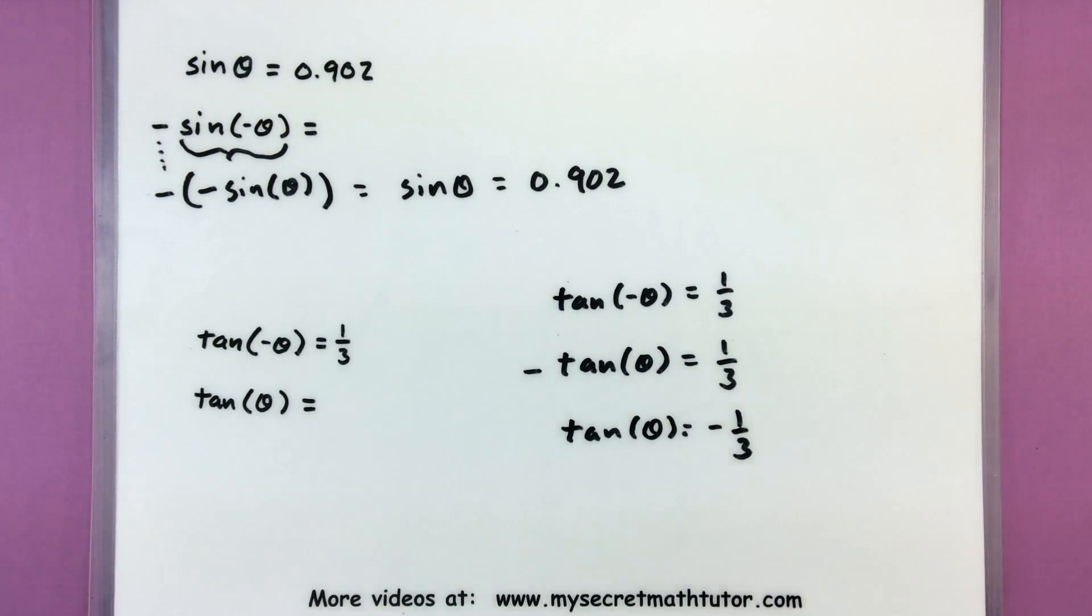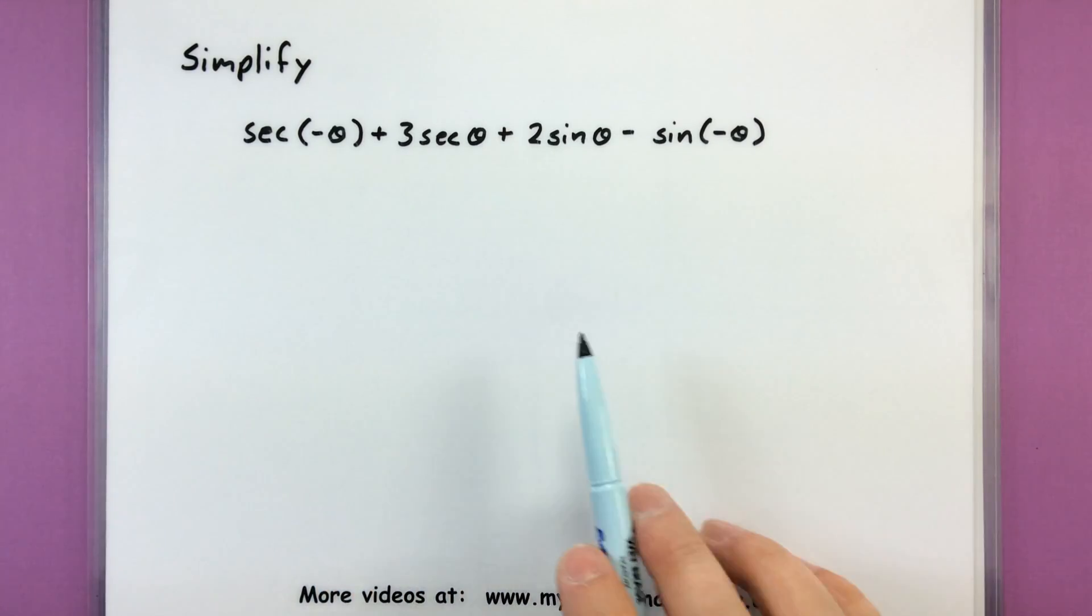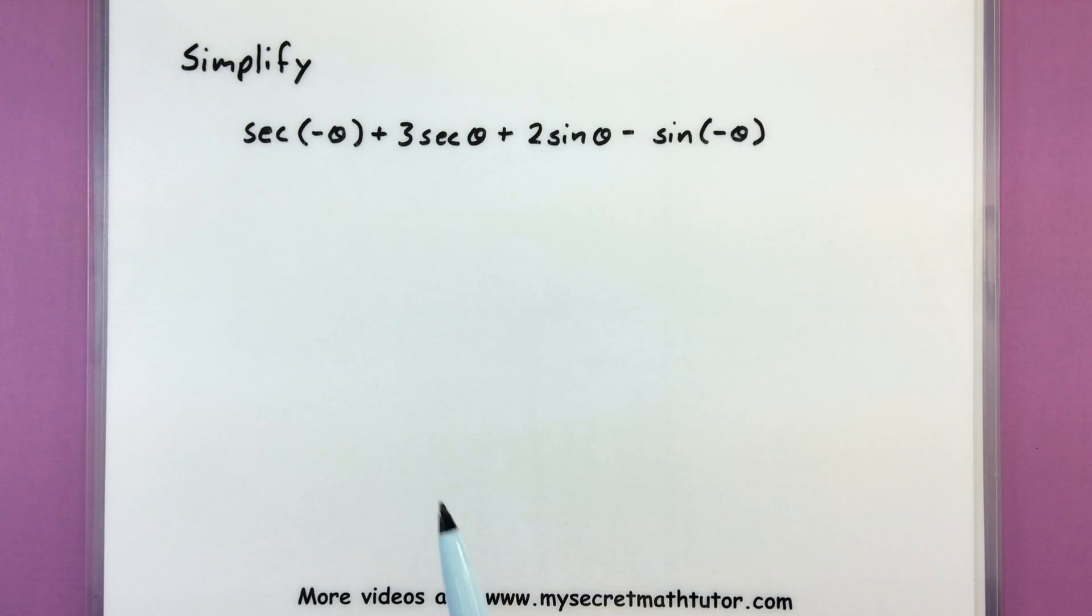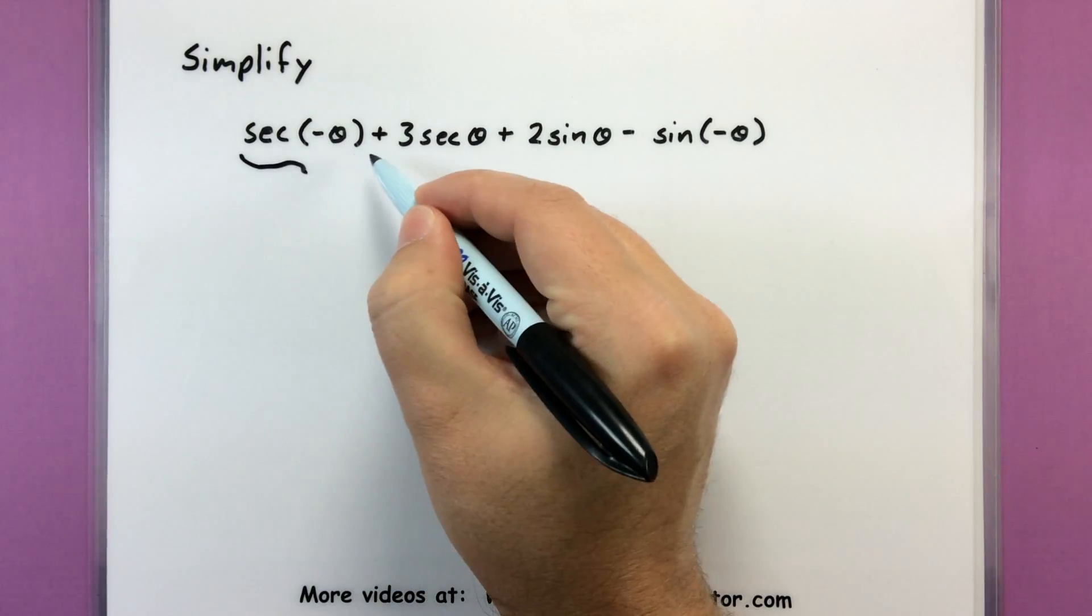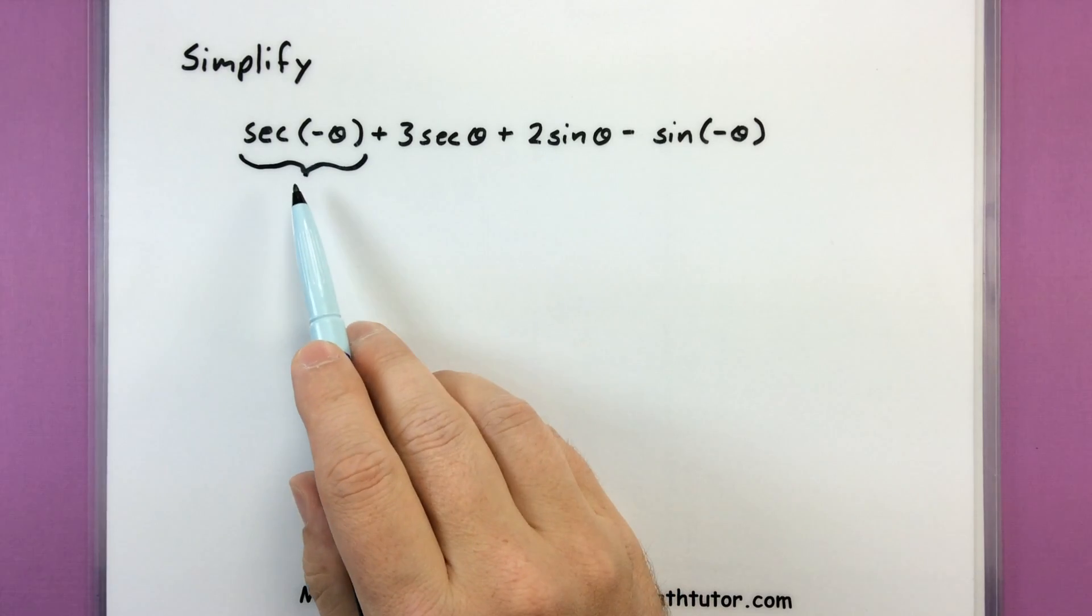All right, lastly, let's see how these identities might help us simplify an expression. So I have here a bunch of trigonometric functions. I have some secants, some sines, and I want to simplify this by making it as condensed as possible. But with them having different angles, they're technically not like terms. I can't normally put these guys together. But we're going to start replacing these negative angles so that I have positive angles in there, so they will be like terms, and then we can actually go ahead and combine them.